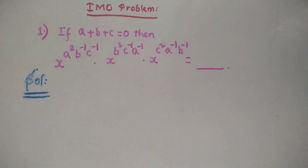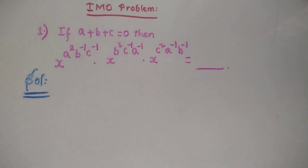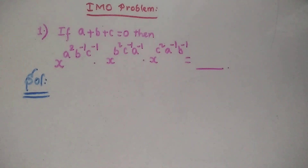Let us see the IMO problem. Here, if a plus b plus c equals 0, then we have to find the value of x^(a²) · b^(-1) · c^(-1) · x^(b²) · c^(-1) · a^(-1) · x^(c²) · a^(-1) · b^(-1).